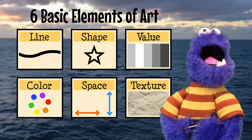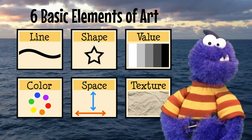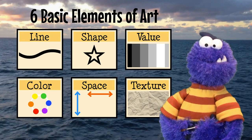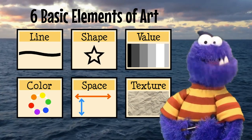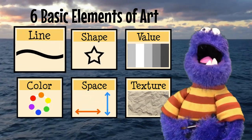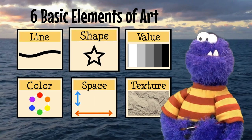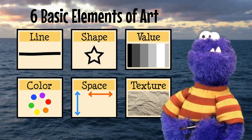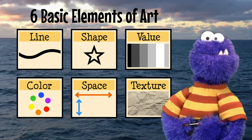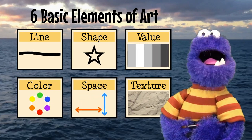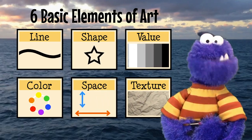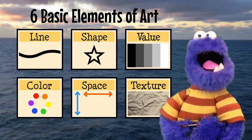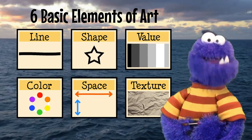There are six basic elements of art — six building block components that art is made from. Here they are: line, shape or form, value, color, space, and texture. And this time on Paint by Monster, we are going to talk about the very first element, the line.